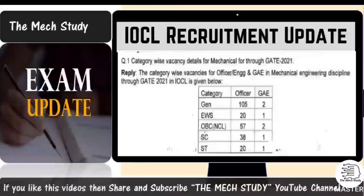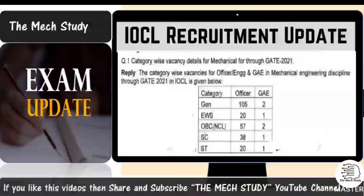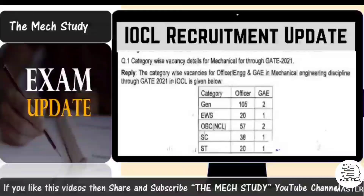The RTI also covered the GD and PI weightage along with GATE in the final selection process. The first RTI question was regarding category-wise vacancy details for mechanical engineers via GATE 2021. The reply stated: General category — 105 officer posts and 2 apprentice posts; EWS — 20 officer posts and 1 apprentice post; OBC — 57 officer posts and 2 apprentice posts; SC — 38 officer posts; ST — 20 officer posts and 11 apprentice posts.